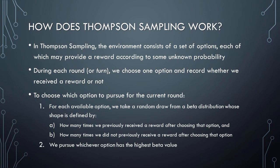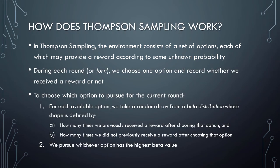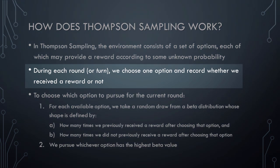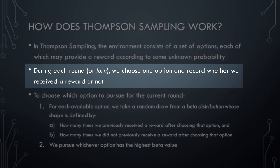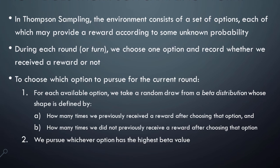Now that we know what Thompson Sampling is, let's see how it works. In Thompson Sampling, the environment consists of a set of options, each of which may or may not provide a reward according to some unknown probability. We only need to consider whether we receive a reward or not when we choose an option. In Thompson Sampling, the action that we take during each round, or alternatively during each turn, is to choose one of the available options and then record whether we received a reward or not. We can think about whether we received a reward or not as winning or losing. In order to choose which option to pursue during the current round, we just need to follow two steps.